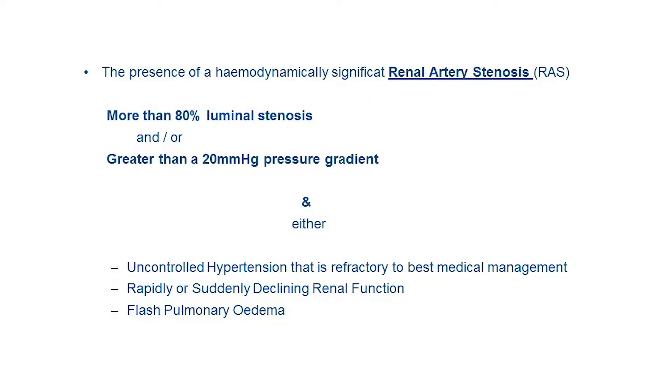Renal artery stenosis is identified by luminal stenosis exceeding 80%, associated with a pressure drop across the stenosis of more than 20 mmHg. This can quite frequently be combined with a number of clinical presentations including poorly controlled hypertension refractory to multiple medications, as well as rapidly deteriorating renal function and flush pulmonary edema.